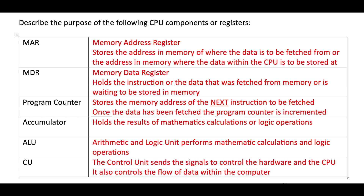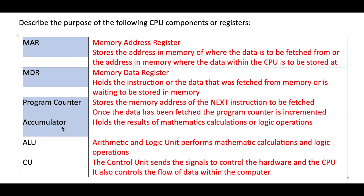It is worth noting that the Memory Address Register, Memory Data Register, Program Counter, and Accumulator are all defined as registers — temporary data stores within the CPU. The Arithmetic and Logic Unit and the Control Unit are both parts of the CPU and are classed as components of the CPU.